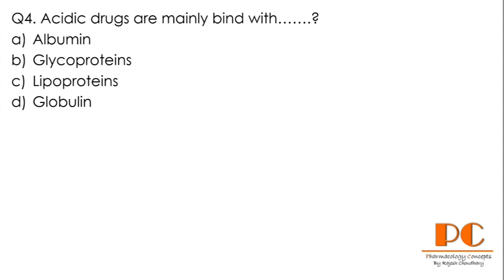Question number four: acidic drugs mainly bind with which plasma protein? Option A: albumin. Option B: glycoproteins. Option C: lipoproteins. Option D: globulin. Right answer is A — albumin.